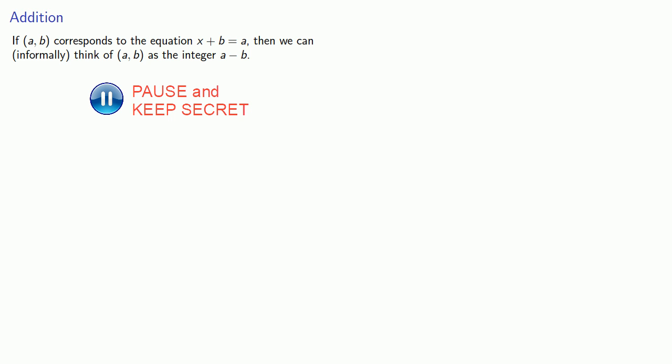So let's try to define addition. Now, if this ordered pair corresponds to the equation x plus b equal to a, then we can informally think about the ordered pair a, b, as the integer a minus b. So let's think about the addition of these ordered pairs. So if I want to add a, b plus c, d, well, a, b I can think about as the integer a minus b. c, d I can think about as the integer c minus d. And so when we add the integers, we can simplify this in any number of ways. But we have this connection between the difference a minus b and the ordered pair a, b. So let's try to write this sum as a difference between two quantities.